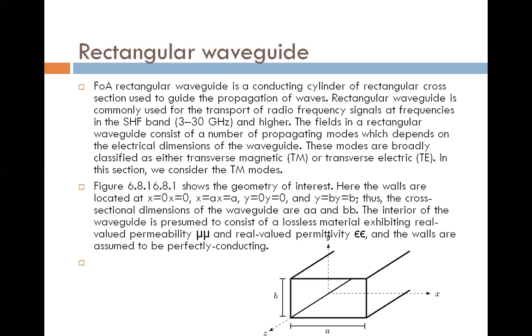The interior of the waveguide is presumed to consist of lossless material exhibiting real-valued permeability and real-valued permittivity, and the walls are assumed to be perfectly conducting. This is the basic rectangular waveguide. It is a hollow structure with two dimensions A and B. Depending on the frequency range, we can design the A and B and make one good rectangular waveguide.